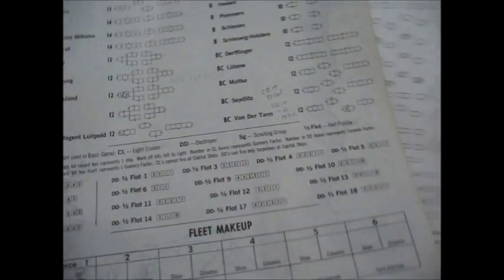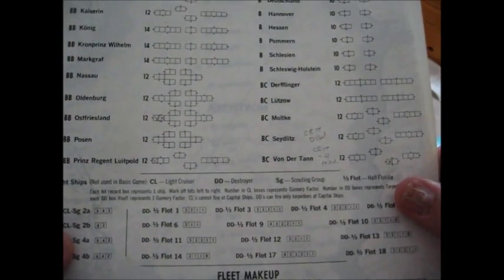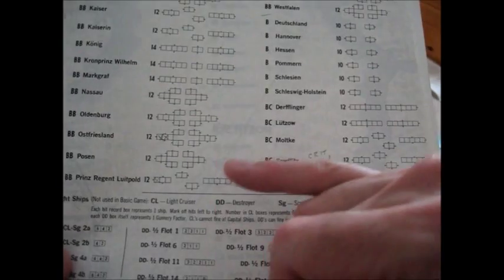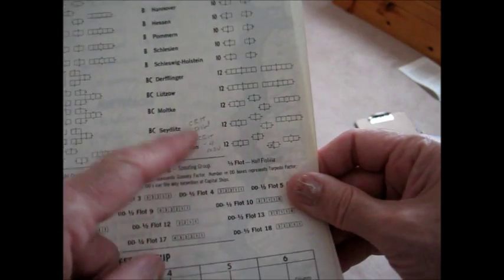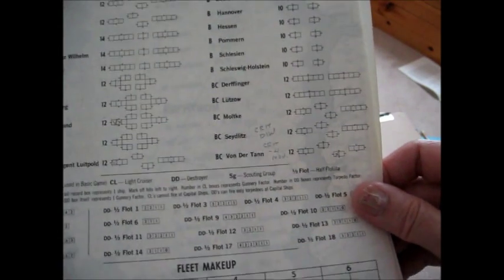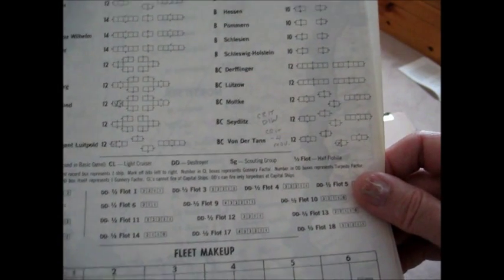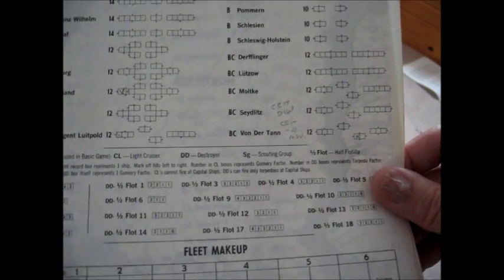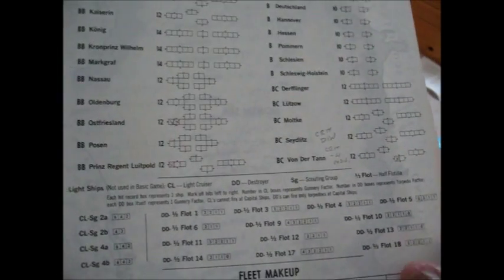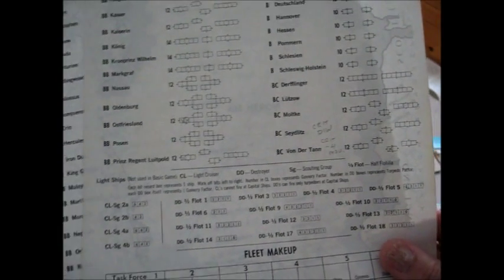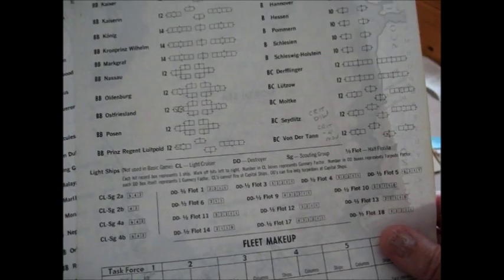The British got some interesting hits on the Germans. They only got about eight hits. But they got one, two, three critical hits. And they were really ugly critical hits. Two of them left the ship dead in the water. And the other one is minus four in speed. So the critical hits were very bad. I know the critical hits is an optional rule. And I think they are probably too much.